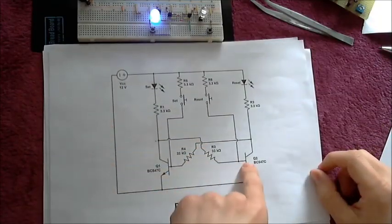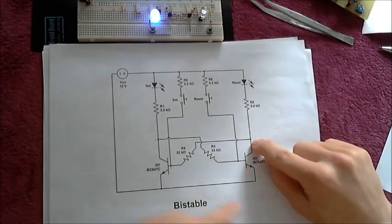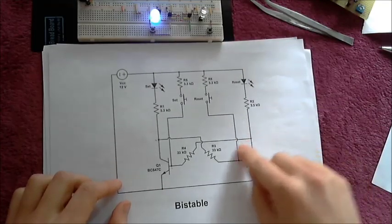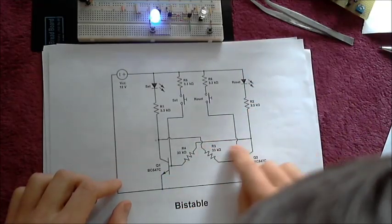When this transistor is on, this transistor is fully off because you can see that this collector is low, which means that there's no base voltage to turn this on. So this is off, the collector is high.